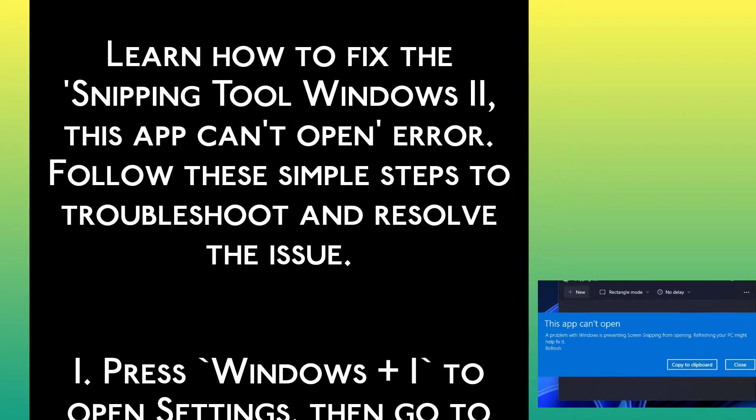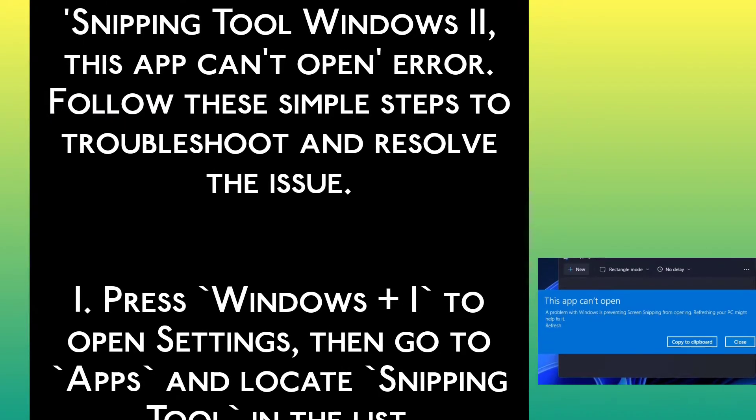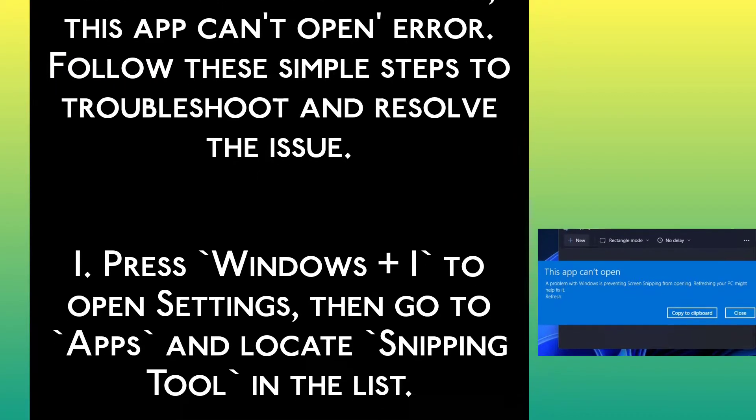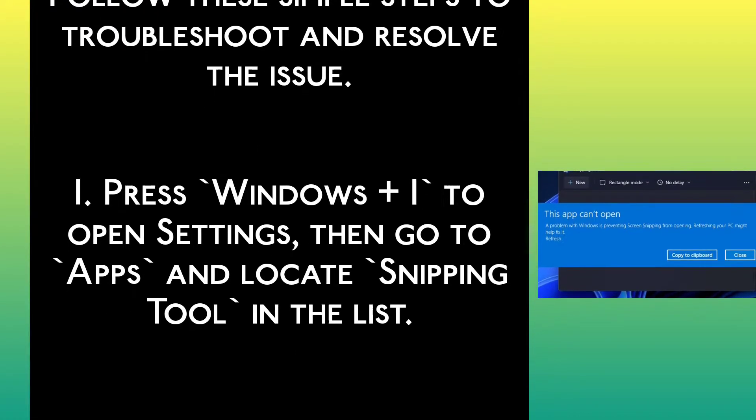Step 1: Press Windows + I to open Settings, then go to Apps and locate Snipping Tool in the list.